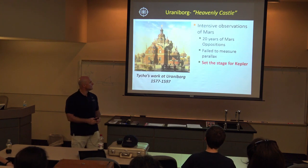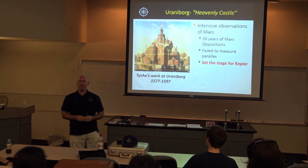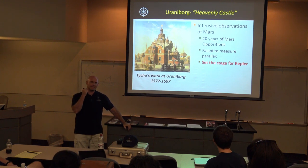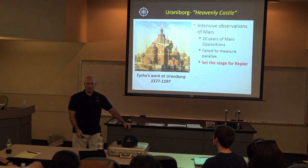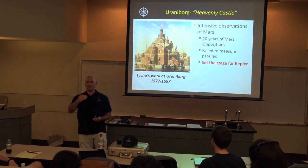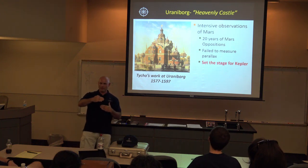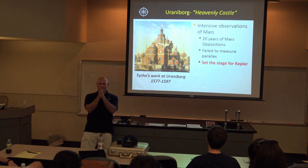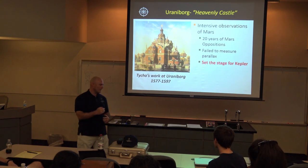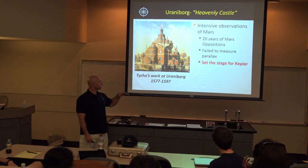Here things get really interesting and set the stage for Johannes Kepler. Tycho made detailed observations of the orbital path of Mars, collecting 20 years of precise data — the best in the world at that time — covering multiple Mars oppositions. He was trying to measure parallax for Mars to get its distance as part of his Tychonic model, but he failed to get more than one or two arc minutes of precision. By continuing, he kept getting better data, and those 20 years ultimately set the stage for Kepler to discover the laws of planetary motion.